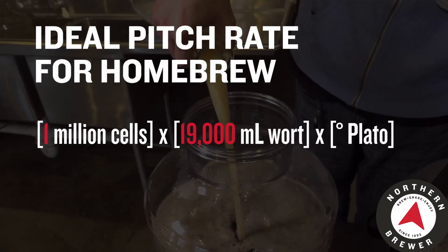For most beers I make, I go right in the middle of that ideal pitch rate: one million yeast cells per milliliter of wort per degree Plato. So that's one million yeast cells times the number of milliliters. A five-gallon batch is 18,927 milliliters — roughly 19,000. So the formula is one million times 19,000 times degrees Plato. Degrees Plato is just a different way of measuring your gravity — a different scale, similar to Brix.